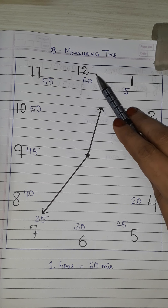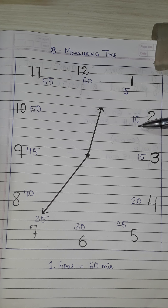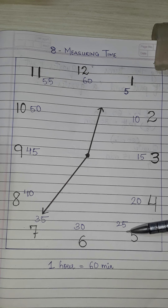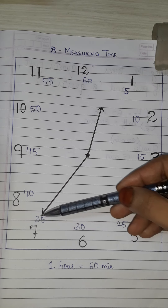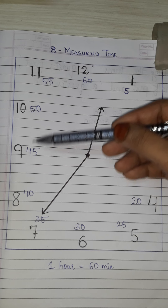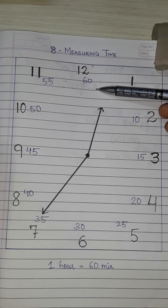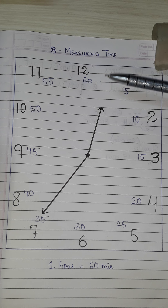How do we count in minutes? 5, 10, 15, 20, 25, 30, 35, 40, 45, 50, 55 and 60. So usually in one hour we have 60 minutes.